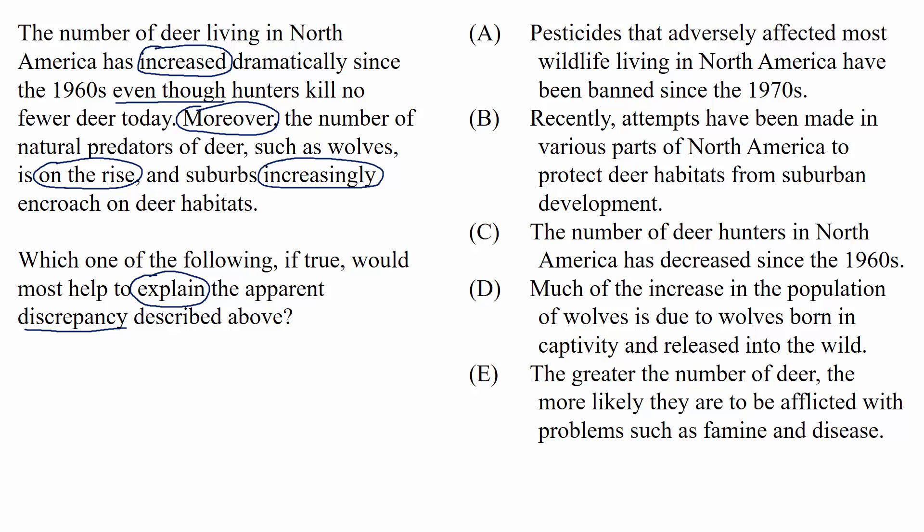With explain questions and resolve questions, our first job is to describe the situation that doesn't seem to make sense. We're told there are more deer living in North America since the 1960s. But we also learned that hunters kill no fewer deer today than they used to, that the number of deer's natural predators is increasing, and that suburbs are encroaching more and more on deer habitats. If we take all of the information together, we would actually expect there to be fewer deer living today. So lots of threats to deer are flourishing, and yet the number of deer has increased dramatically.